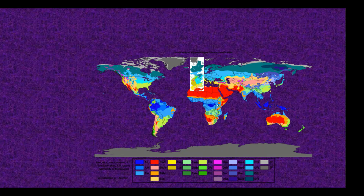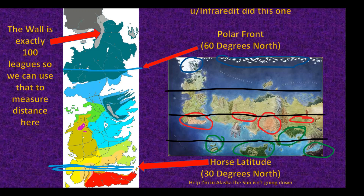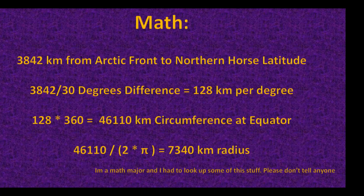Since we don't know how far north the Lands of Always Winter go, or how far south Sothoryos' geography and climate extends, we should stick with what we do know. Thankfully, a redditor did most of the work. Looking at the map and comparing it to Europe, we can see similarities in local climate patterns. Dorne is dipping into the desert area, suggesting the southern border likely lies on the northern horse latitude. Using the Wall as a guide, the math shows that each degree of latitude is approximately 128 kilometers, giving Planetos a rough radius of about 7,340 kilometers.